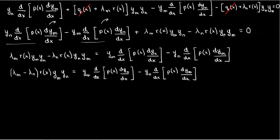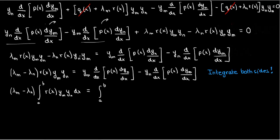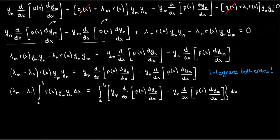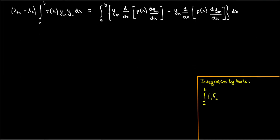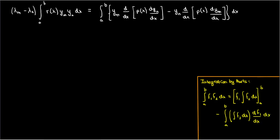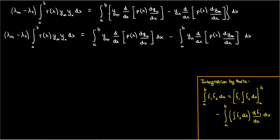Here comes the fun part. Because we have to prove that orthogonality applies here, we're going to have to perform an integration. So let's integrate both sides from x equals a to x equals b. The integral on the left can just be left as is, but the integral on the right has to be simplified. Since it's in terms of y_m, y_n and their derivatives, we can use integration by parts. If I'm integrating the product of two functions, that becomes the first function times the integral of the second, minus the integral of the second function times the derivative of the first. I'll split the right-hand side integral into two parts to make things easier.